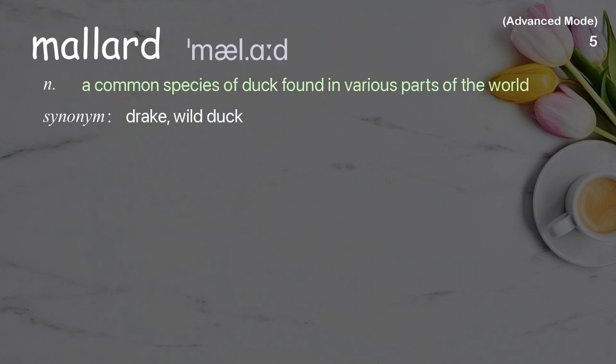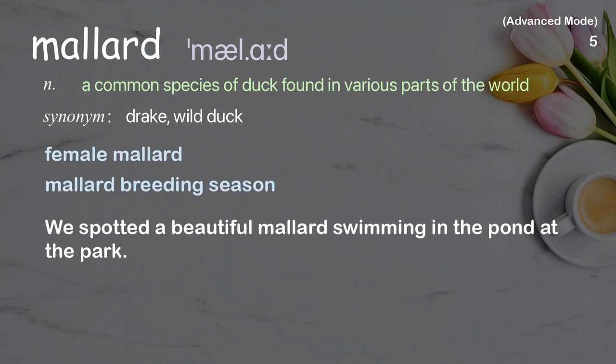Mallard. A common species of duck found in various parts of the world. Examples: female mallard, mallard breeding season. We spotted a beautiful mallard swimming in the pond at the park.